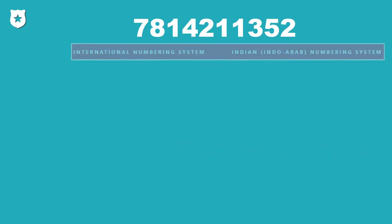There are two types of numbering systems. The first one is the international numbering system and the second one is the Indian numbering system. Let's talk about the international numbering system.